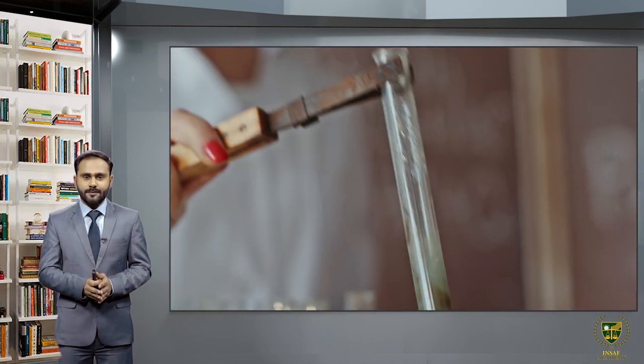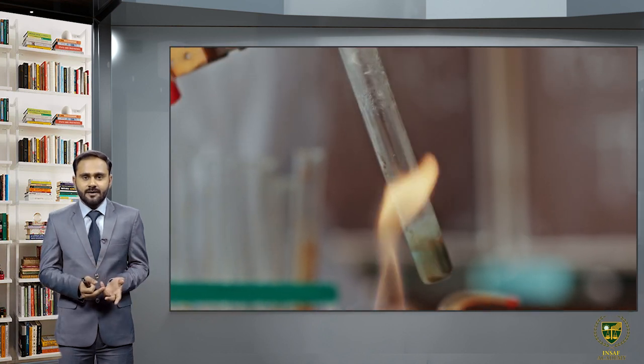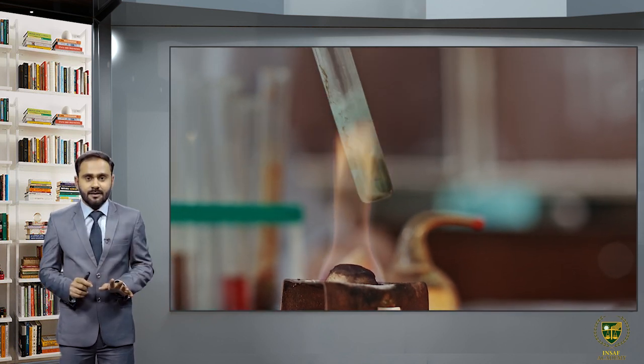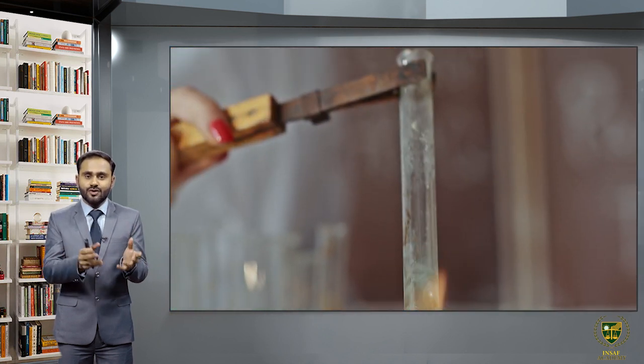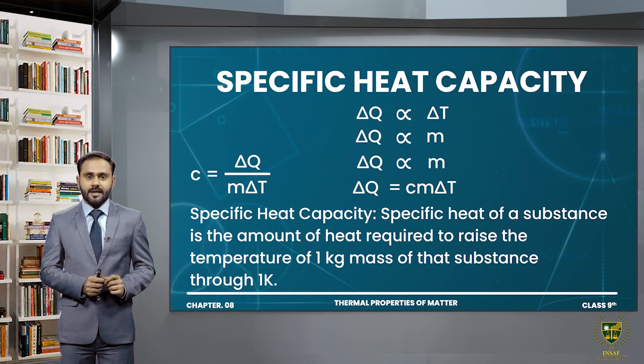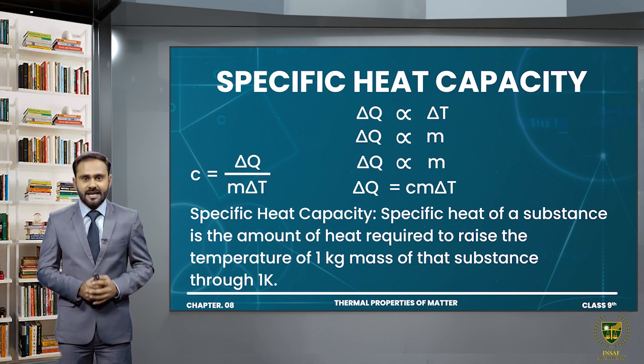Ab mein aapko kehta hoon ke pehle mere paas kuch mass tha, kuch liquid tha jo ke small amount mein tha. Ab mere paas ek liquid hai jo large quantity mein maujood hai. Maine iska temperature increase karna hai, toh obviously mujhe zyada heat required hogi iska temperature increase karne ke liye. So that means ke heat jo hum provide kar rahe hain, wo depend kar rahi hai mass par bhi — ke aapke paas kitni quantity mein wo cheez maujood hai. So delta Q is also directly proportional to mass m — jitna mass zyada hoga, utni zyada heat aapko provide karni hogi temperature ko increase karne ke liye.